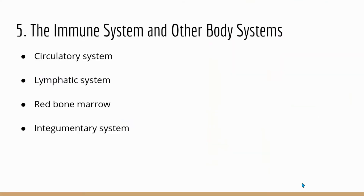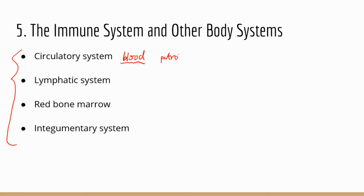The next topic is about the immune system and other body systems. You're expected to know the relationship between the immune system and other body systems. The circulatory system contains blood, and a lot of the immune molecules, chemicals, and cells are in the blood — they can patrol the body through blood because blood is the highway system of the body, transporting everything to every part.